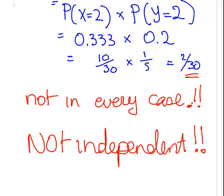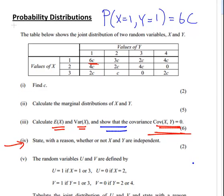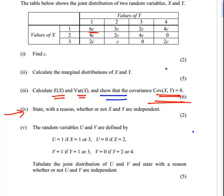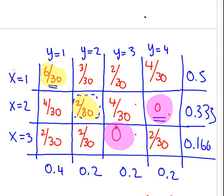Now let's look at the last part. The random variables U and V are defined as follows: U equals 1 if X is 1 or 3, and 0 if X equals 2. V equals 1 if Y is 1 or 3, and 0 otherwise. We need to tabulate the joint distribution of U and V. I'm going to construct a brand new table where U is 0 or 1 and V is 0 or 1, based on the existing data.